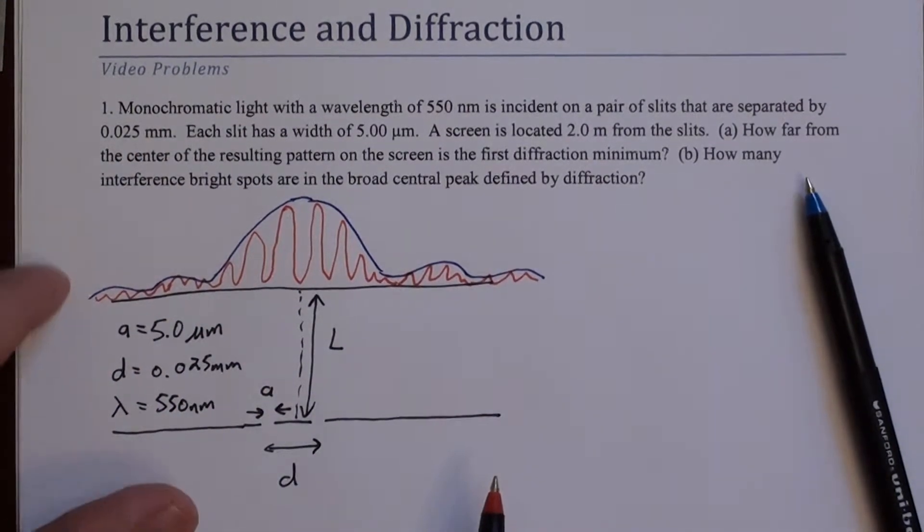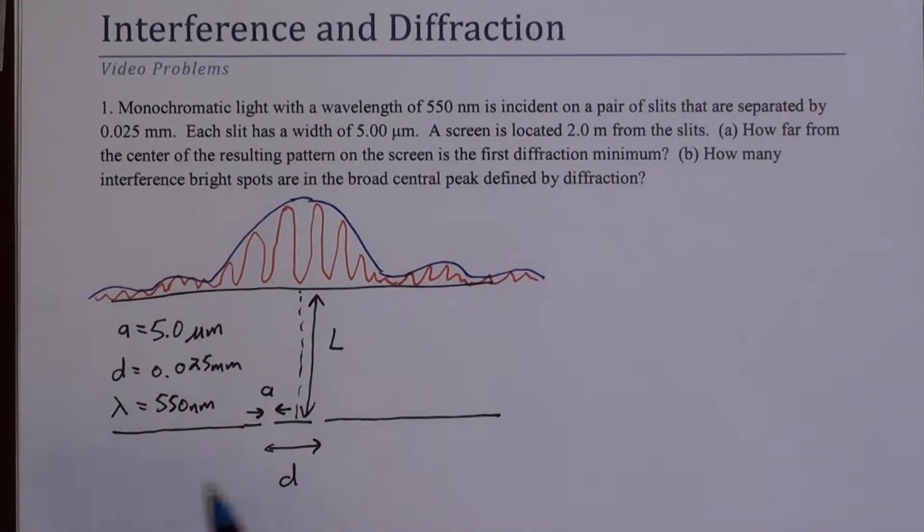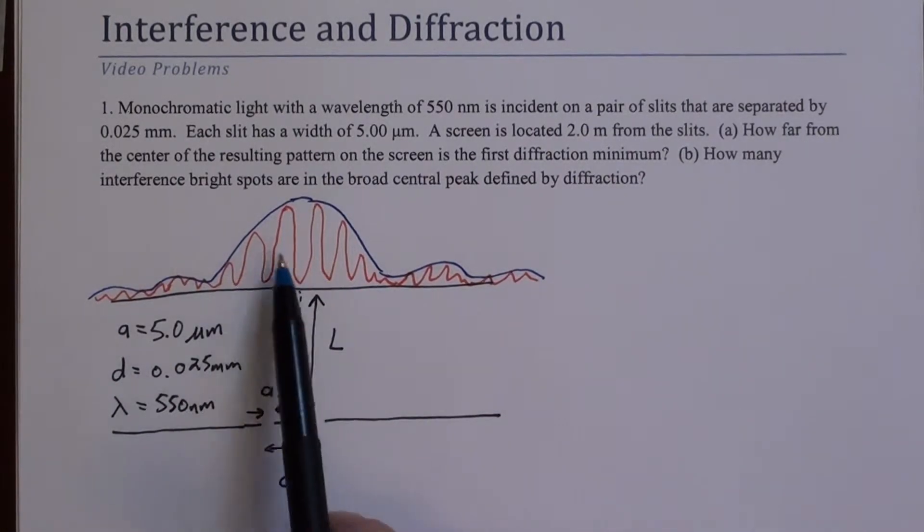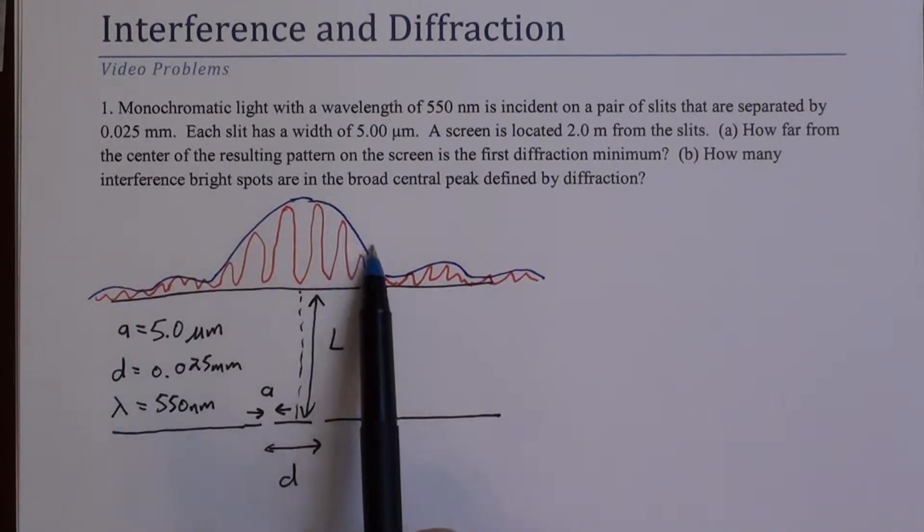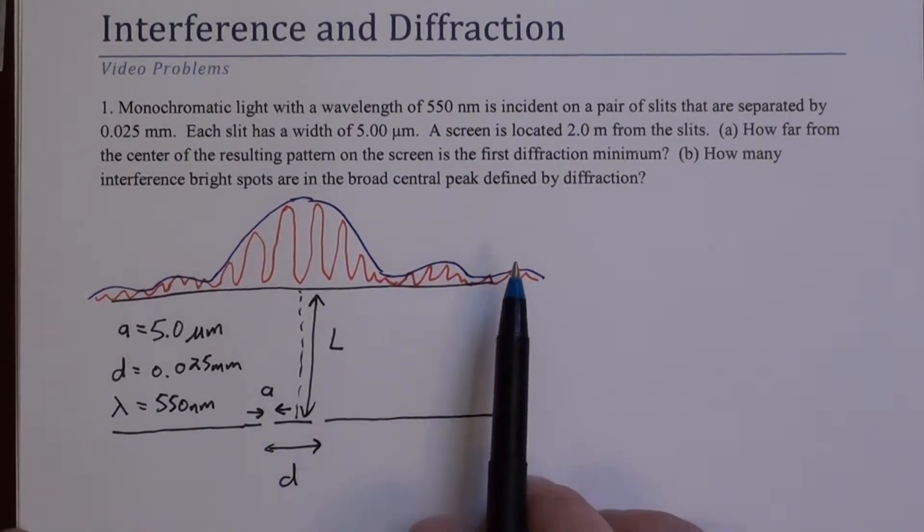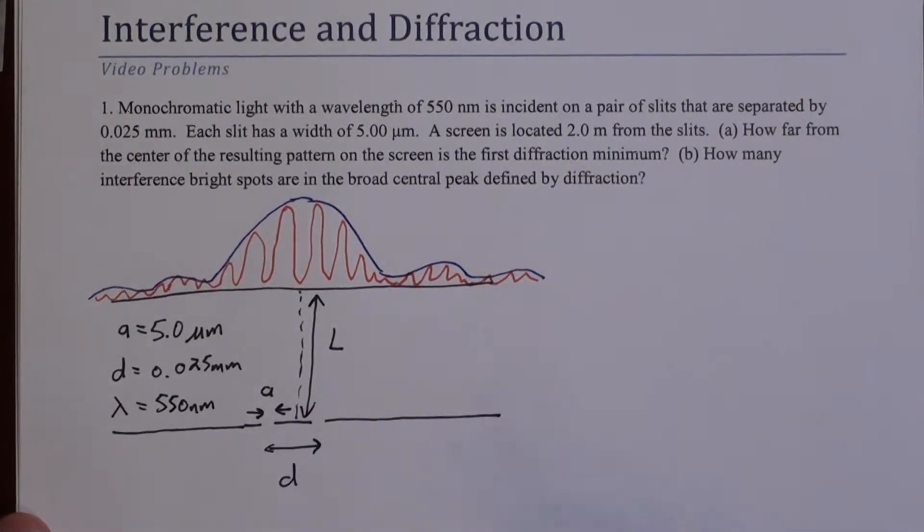So what I've plotted here is intensity as a function of position. So again, the inside red here, that's interference, and the envelope, the blue kind of curve that this follows in a broad sense, is the diffraction.